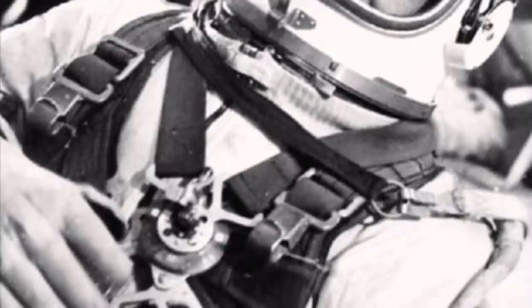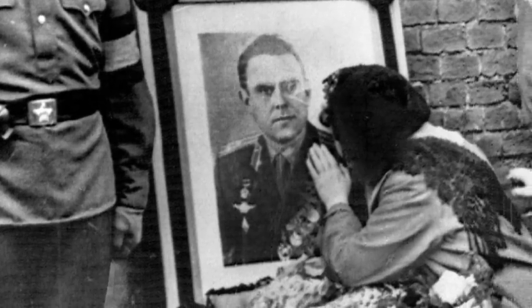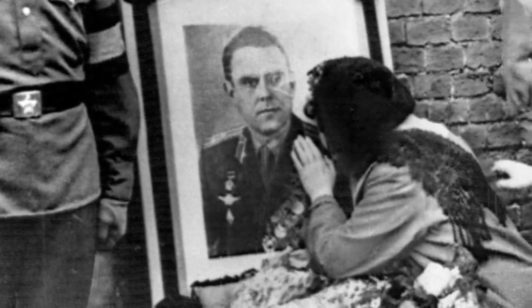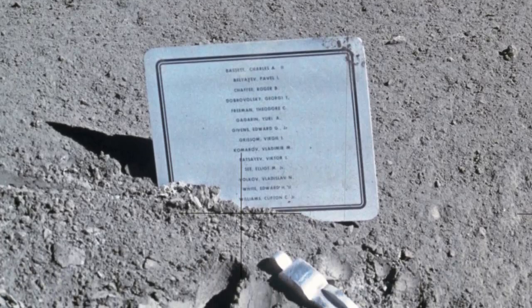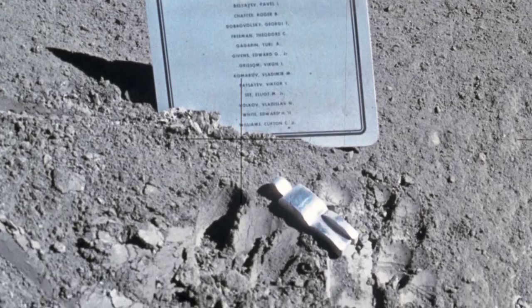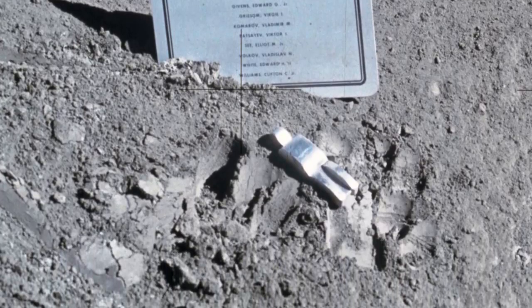Komarov was named Hero of the Soviet Union for a second time. He was given a state funeral, and his remains were buried in the Kremlin Wall Necropolis at Red Square, Moscow. Komarov's name did make its way to the moon with the Fallen Astronaut aluminum sculpture and plaque. It was commissioned by the crew of Apollo 15 and placed on the moon on August 1, 1971.